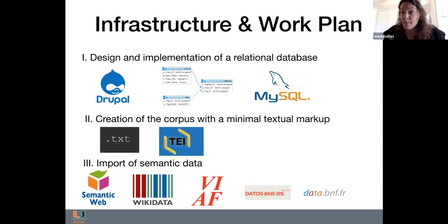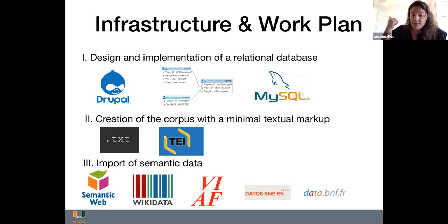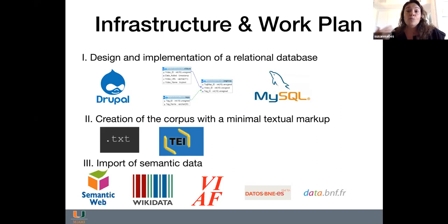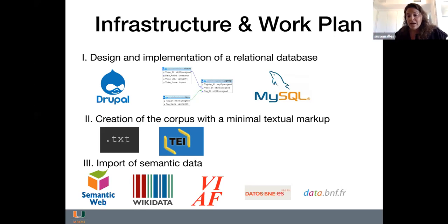La tercera fase, con la que estoy menos familiarizada de momento, consiste en implementar los protocolos de la web semántica a partir de las informaciones ya existentes sobre autores, obras y personajes. El objetivo es reutilizar todo el trabajo que muchas instituciones culturales han hecho ya con su patrimonio cultural, utilizando por ejemplo identificadores únicos para los autores o para las obras.